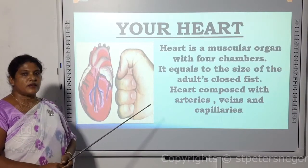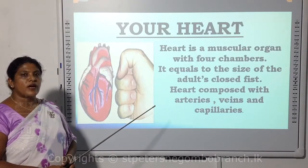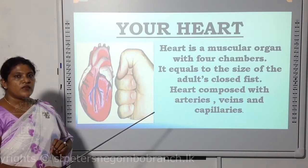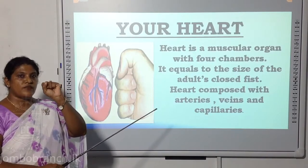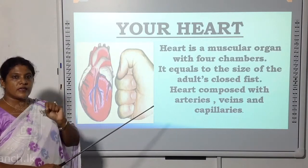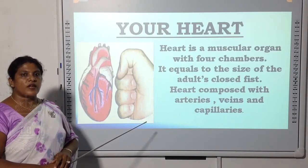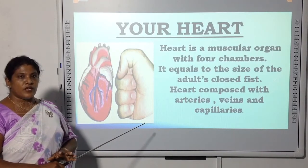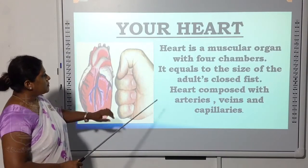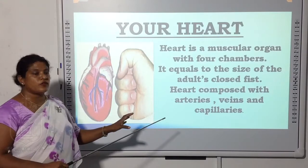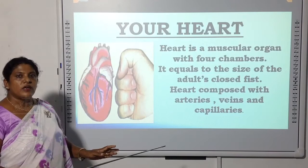Before we discuss human circulation, I would like to talk about the human heart. The human heart is a muscular organ. If you fold your fingers like this, it equals the size of your fist. It consists of four chambers — what we call a four-chambered heart. Since we are mammals, we have two atria and two ventricles. Apart from the four chambers, there are arteries, veins, and capillaries to flow blood.